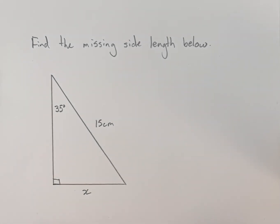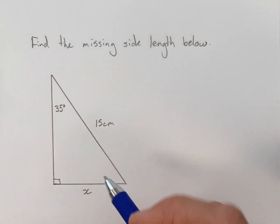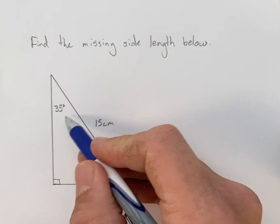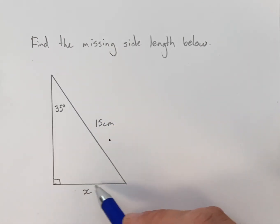Hello, so what we're going to do in this video is use the sine ratio to solve for a missing side length in a triangle. We have a triangle here and we're asked to find the missing side length below. We can see we've got this angle indicated here at 35 degrees, this side length at 15 centimeters, and this side is left with a variable X for us to find.